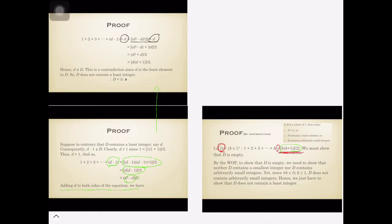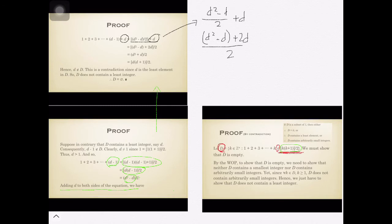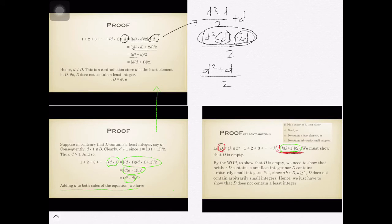Combining the fractions — since we now have d squared minus d all over two plus d all over two — combining gives us d squared minus d plus two d, all over two. Simplifying the numerator, we have d squared plus d, all over two. Factoring out d from the numerator, we'll have d times d plus one, all over two.